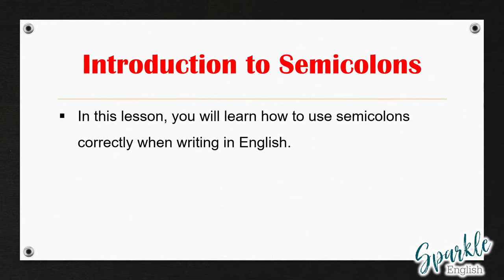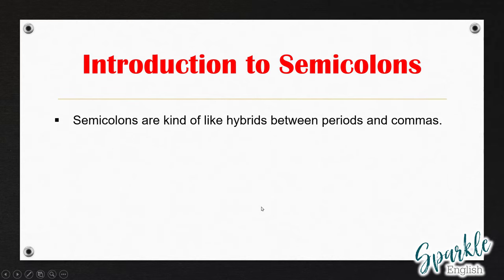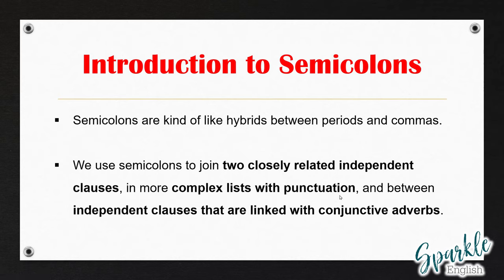In this lesson you will learn how to use semicolons correctly when writing in English. This right here is a colon and this is a semicolon. I've linked you to a video on how to use colons, but today we're going to talk all about how to use semicolons. Semicolons are kind of like hybrids between periods or full stops and commas. We use semicolons to join two closely related independent clauses, in more complex lists with punctuation, and between independent clauses that are linked with conjunctive adverbs. I know this sounds very confusing, but don't worry — in this video I'm going to break down rule by rule how to use semicolons, and I promise you that at the end of this video you will understand all the different uses of semicolons.